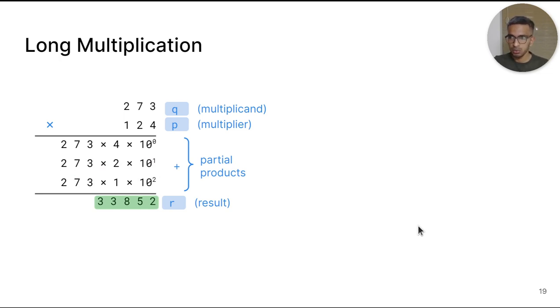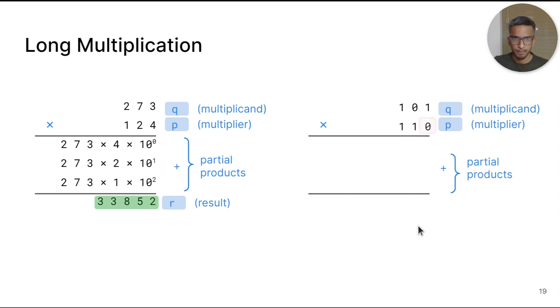To multiply two binary numbers is even more straightforward because the digits of the multiplier can only be either 0 or 1. If the digit is 0, then we can skip this step entirely. If the digit is 1, we just add the multiplicand to the result since 1 times any number is the same number. The multiplicand must be left shifted by some number of bits according to the place value of the multiplier. This algorithm to multiply two binary numbers using just addition and shifts is commonly referred to as long multiplication.